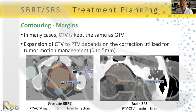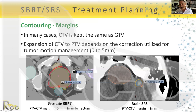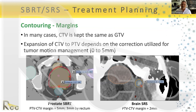For brain SRS the margin between CTV and PTV is typically 0–2 mm, sometimes 1 mm depending on proximity to organs at risk. For prostate SBRT, we use 5 mm all around except 3 mm posteriorly near the rectum. Cone-beam CT is used to verify the spacer position, rectal filling, and bladder filling are consistent across every fraction.